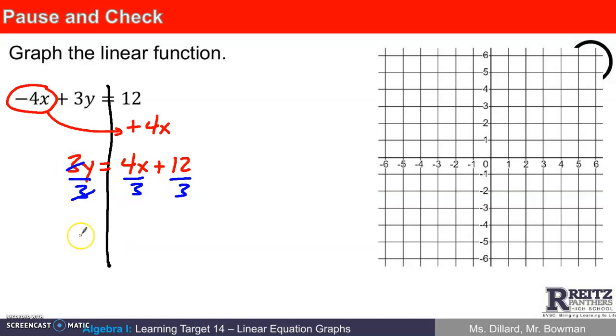The 3s here divide out, and what I get is y equals 4 divided by 3, which doesn't reduce. It's just 4 thirds x, plus 12 divided by 3 is 4. There's my line equation in slope-intercept form.